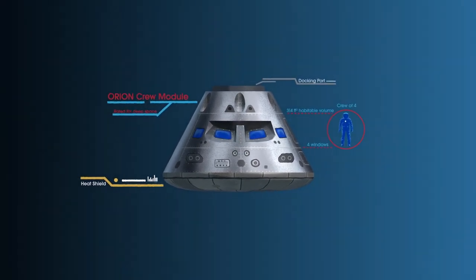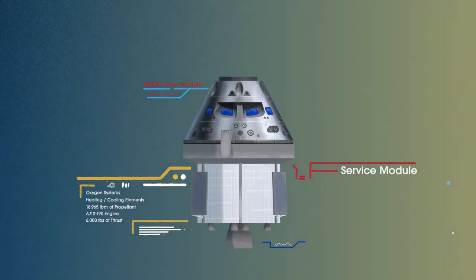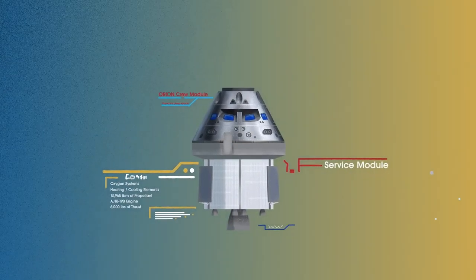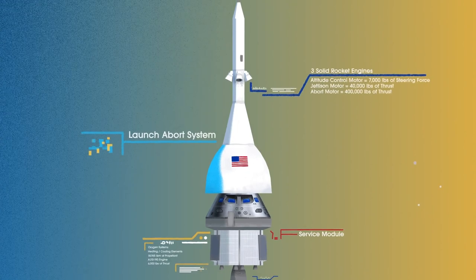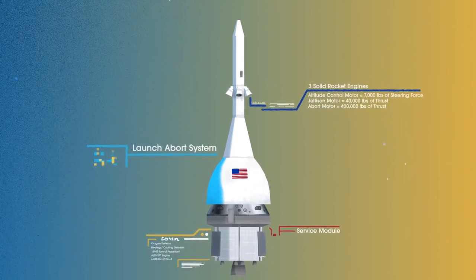The crew module, where up to four astronauts will live and work throughout the flight. The service module, with life-support systems for the crew and its own engine and fuel reserves, and a launch abort system, with engines capable of pulling the crew module to safety during launch should anything go wrong.